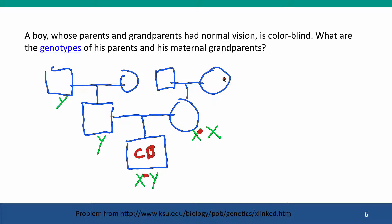What about the mother's parents? Could she have gotten the colorblind X chromosome from her father? If she had, her father would have had to be colorblind — but we're told he had normal color vision, so she couldn't have gotten it from him. Instead, she must have gotten her colorblind X chromosome from her mother. So now we've solved the problem and assigned genotypes to both parents and the maternal grandparents.